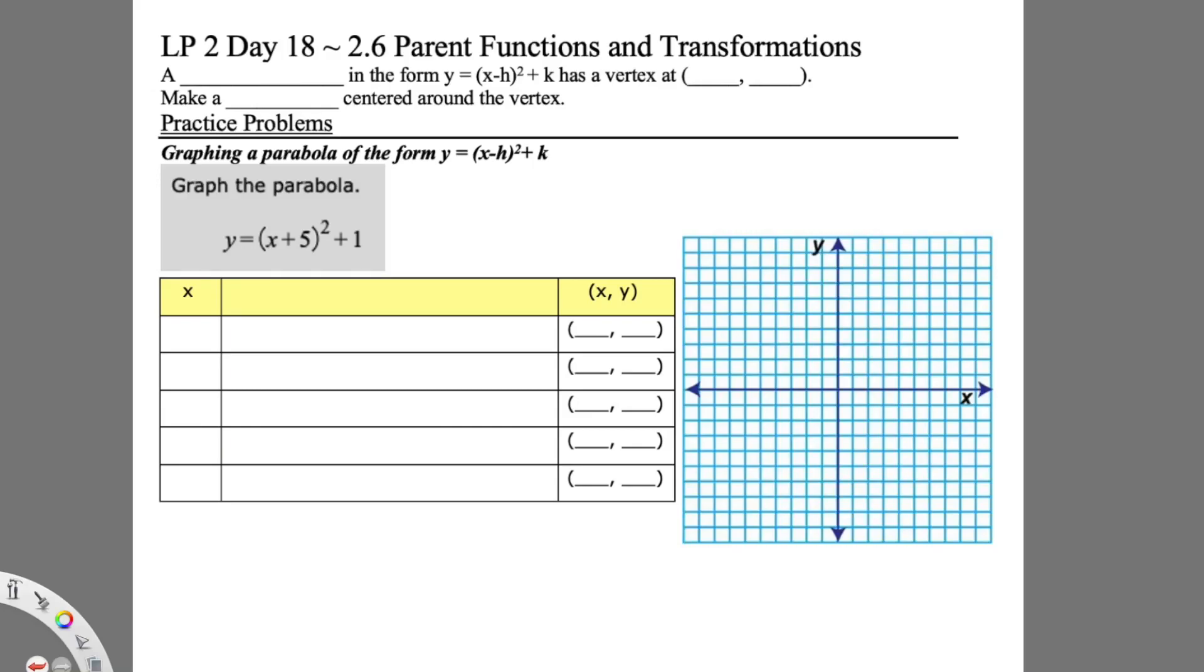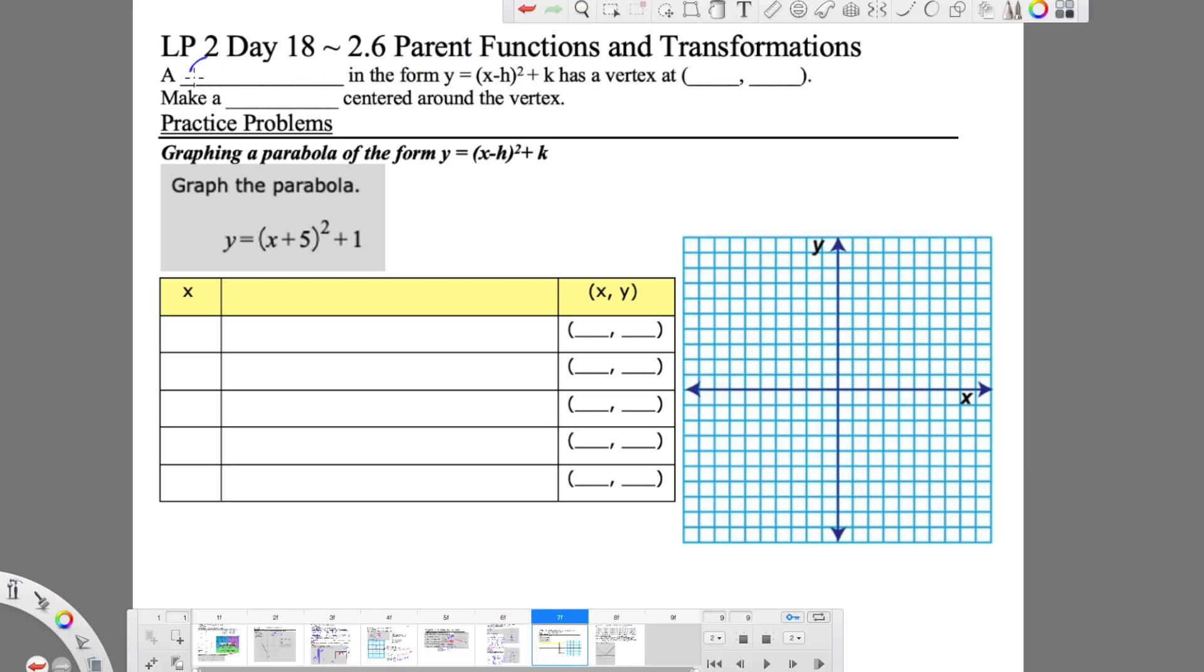Alright, so we're going to graph another function. This time we have a new format, or new form of the line. A function in the form y equals (x minus h) squared plus k has a vertex of (h, k).